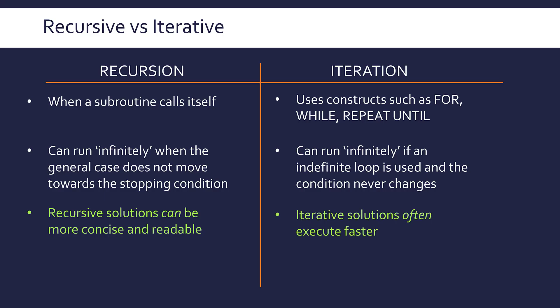But often iterative solutions are faster to run, mostly because of the nature of subroutine calls. When you call a subroutine, it's got to put a stack frame on the call stack. It's got to save its parameters, return address, and any local variables, and it's got to allocate some memory for it. That's an overhead.